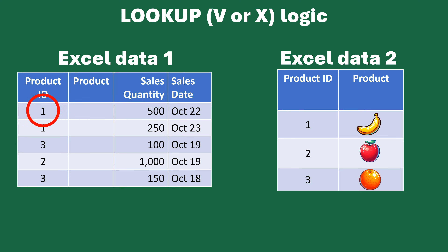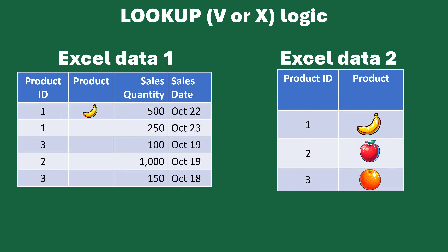How would you go about filling in the product name? Well, you would look at the product ID — in this case, the first row is 1. Then you would go over to the right and say, where do I match this? It's obviously the first one: 1 equals 1, and then I know that first one must be a banana. Then you might put a banana there, and just keep repeating that. So the second row is a banana, the third one is an orange, then an apple and an orange again.